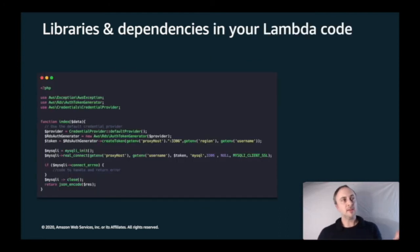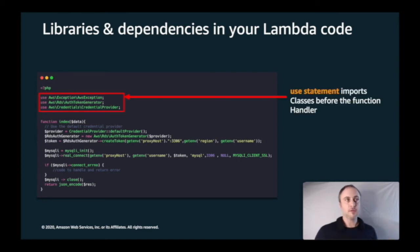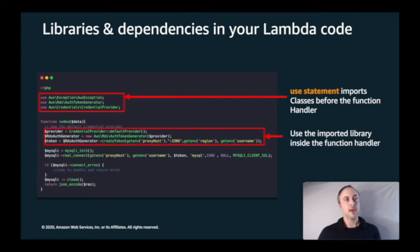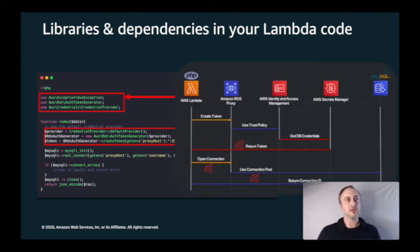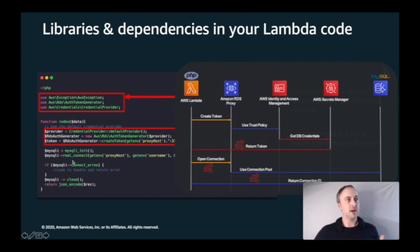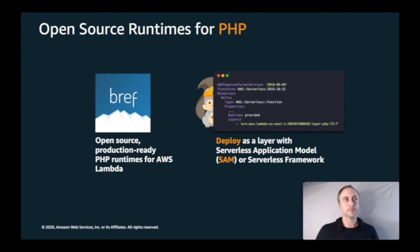Here is an example of an actual Lambda function putting it all together. First I use use statements to import the SDK classes I need. Then I use PHP with those SDK libraries to grab a token from RDS Proxy — this is that token exchange we looked at earlier, all in three lines of code. Then I use mysqli to actually connect to my database.